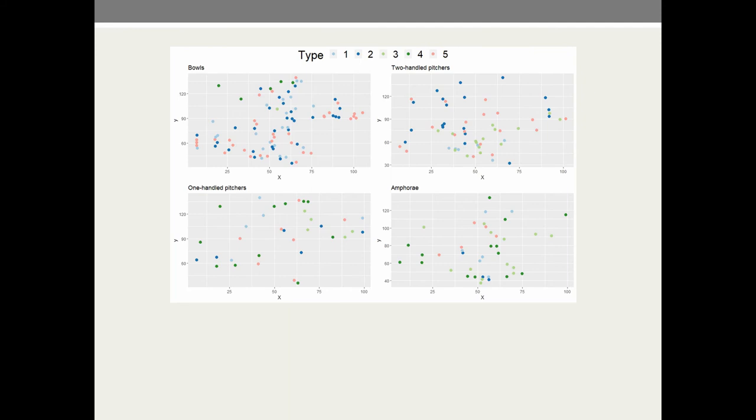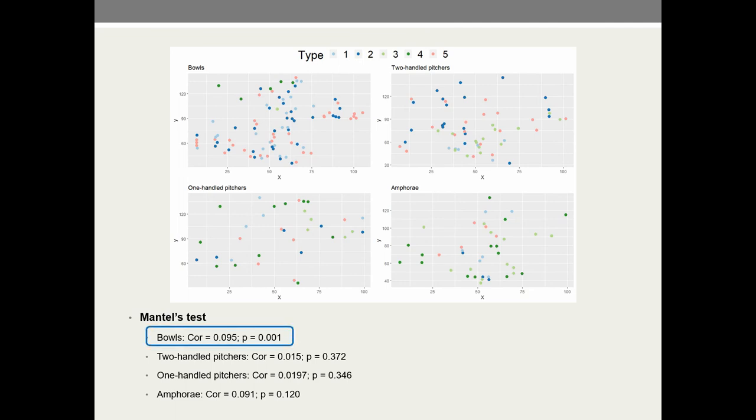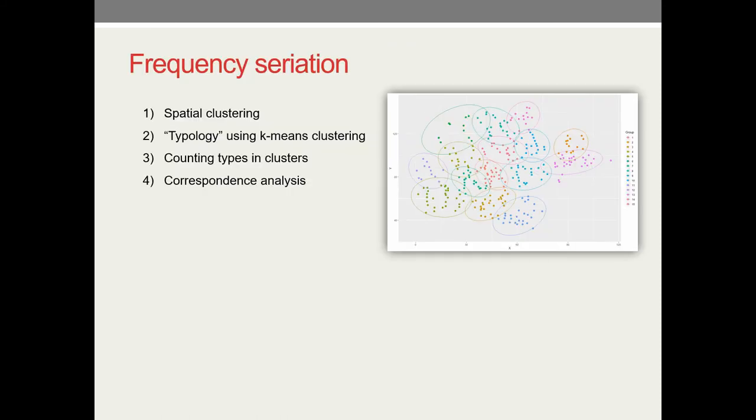No clear spatial patterns that we observe. We also did Mantel's test to formally test this correlation and it has very low values. The only significant correlation is between bowls and two-handled pitchers. But the thing is that this correlation is very low. So a conclusion would be that here the correlation is very weak or that it is non-linear.